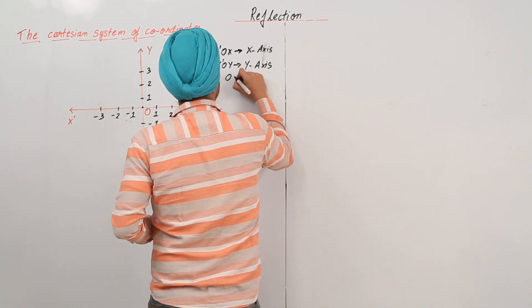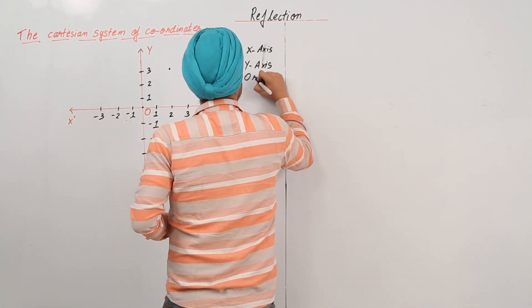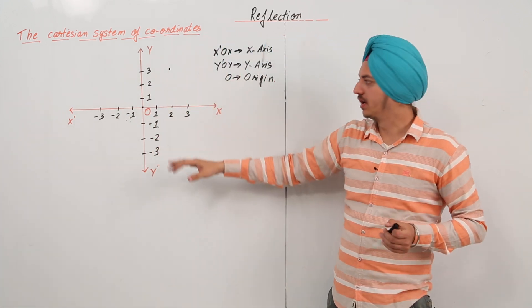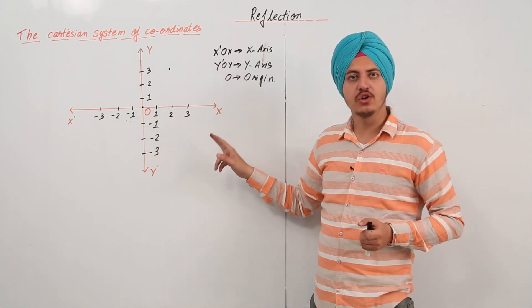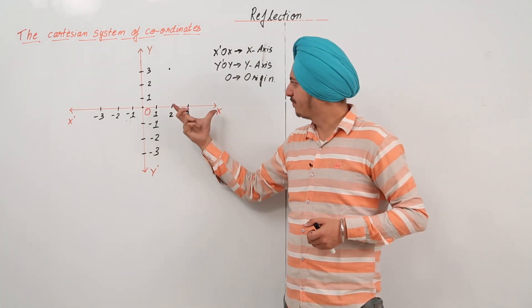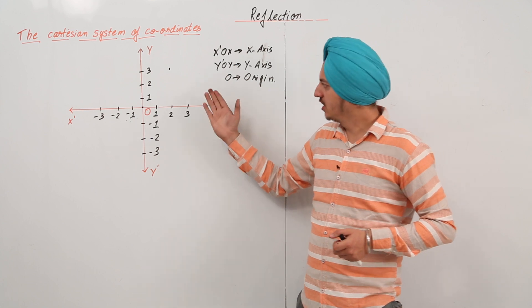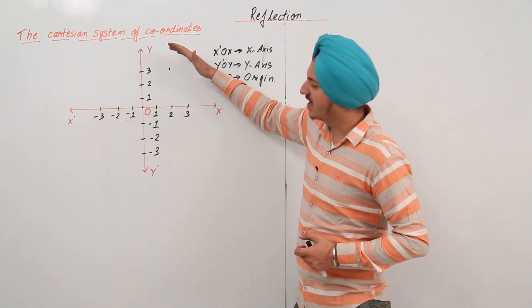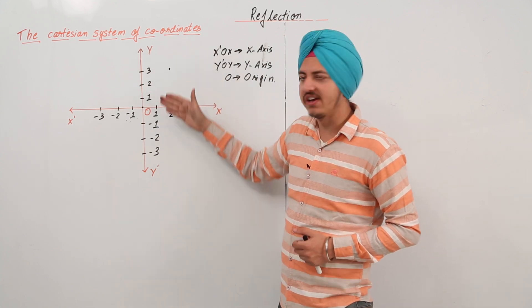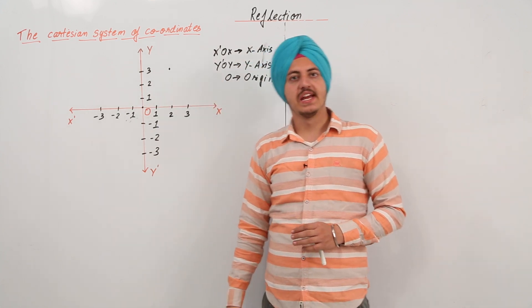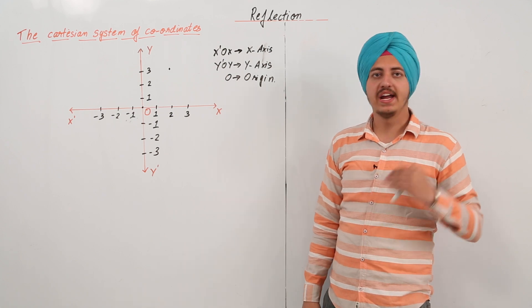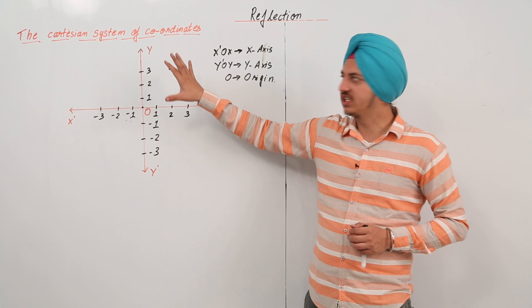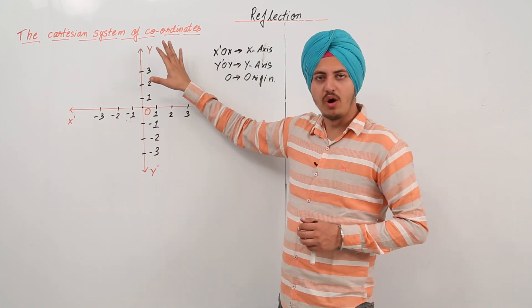The point O in the middle is called the origin. Towards the right of the origin is the positive x-axis; towards the left is the negative x-axis. Upwards from the origin is the positive y-axis, and downwards is the negative y-axis. This is the Cartesian system of coordinates.